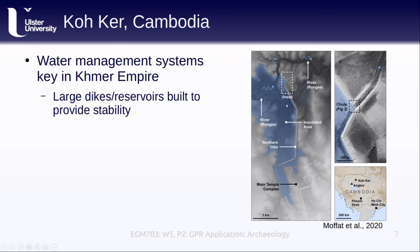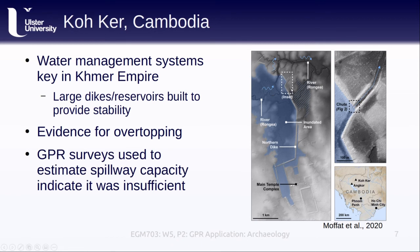There is evidence that this reservoir failed during the first year of its use. This 2020 study by Moffat and others used GPR to map the spillway that was intended to prevent overtopping of the dike system. Using the measurements gathered, they were able to estimate the spillway capacity, showing that it would have been far too small to effectively drain the monsoon floodwaters and prevent the overtopping and flooding of the city.